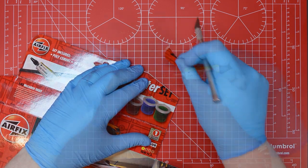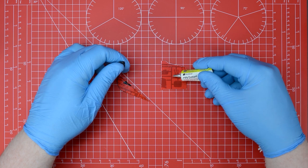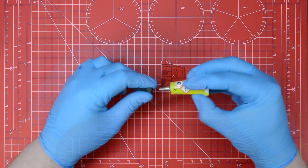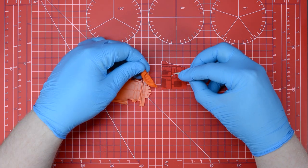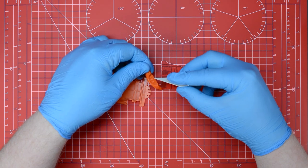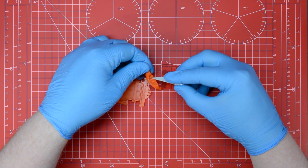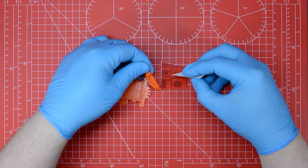We can apply the polycement onto the palette and use the applicator to transfer the glue to the surface of the model. By applying the glue in this fashion we're able to maintain better control and prevent getting excess glue onto the surface where it can cause unsightly marks and fingerprints.